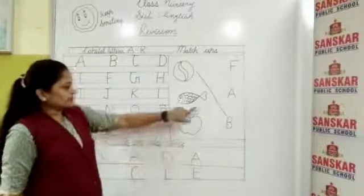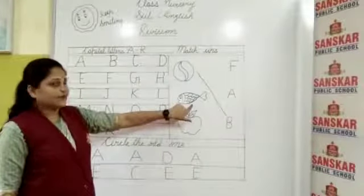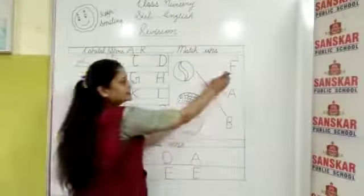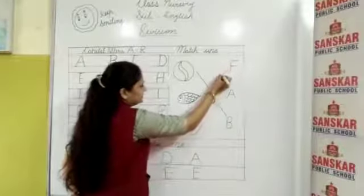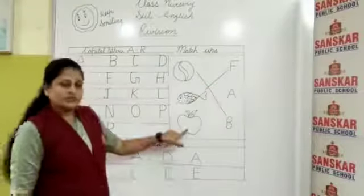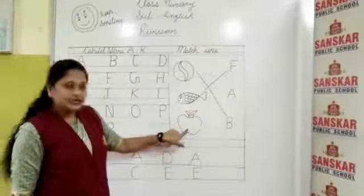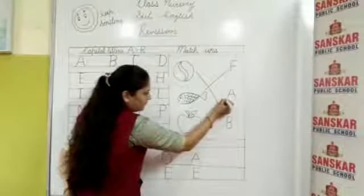Okay, next picture is F for fish. And where is F for fish? This one is F for fish, so match it. Okay, next is picture of apple. This one is apple, so match it with the A for apple.